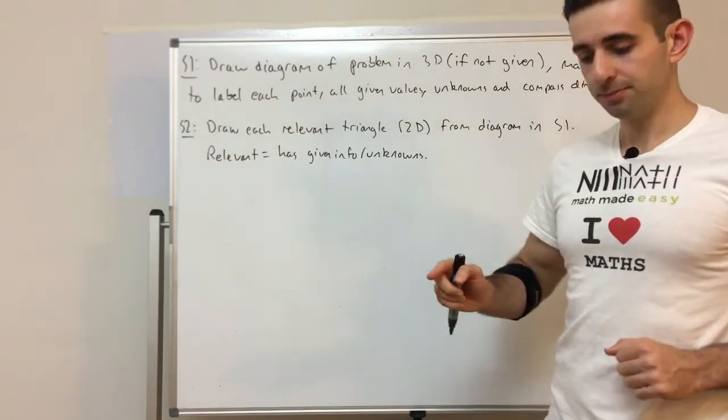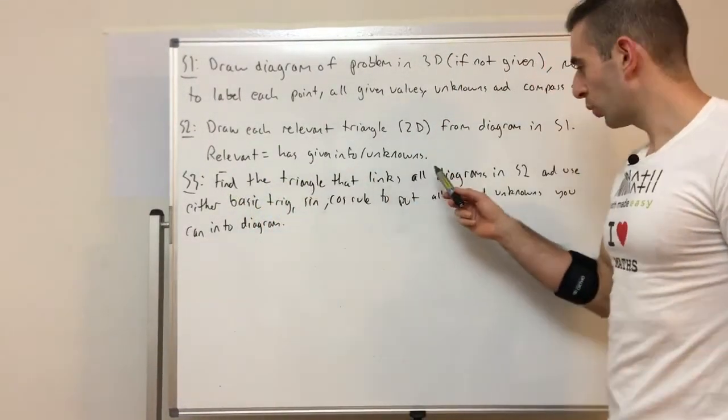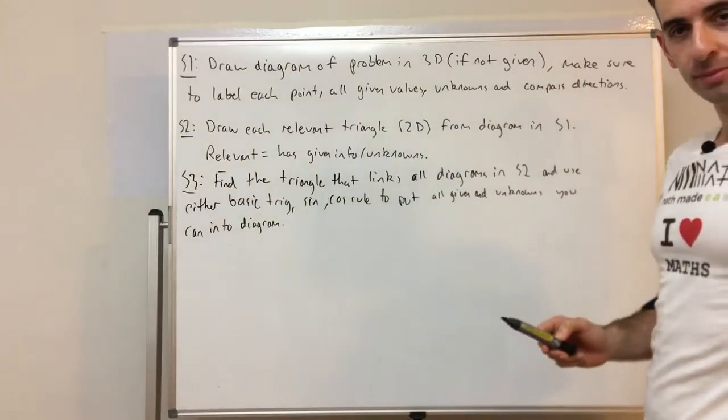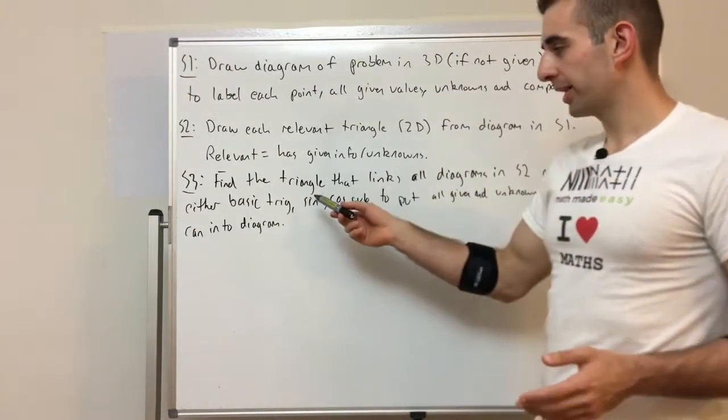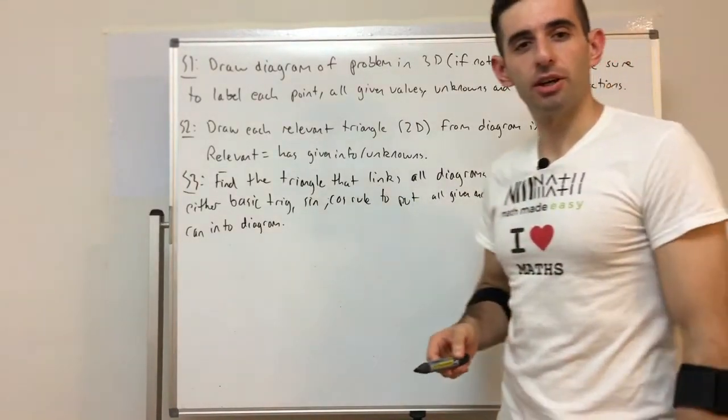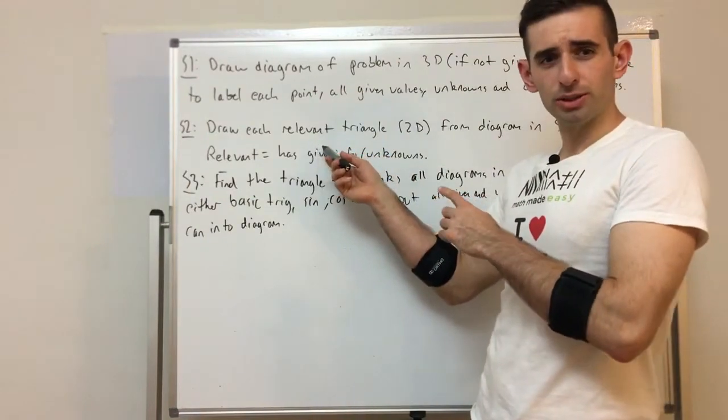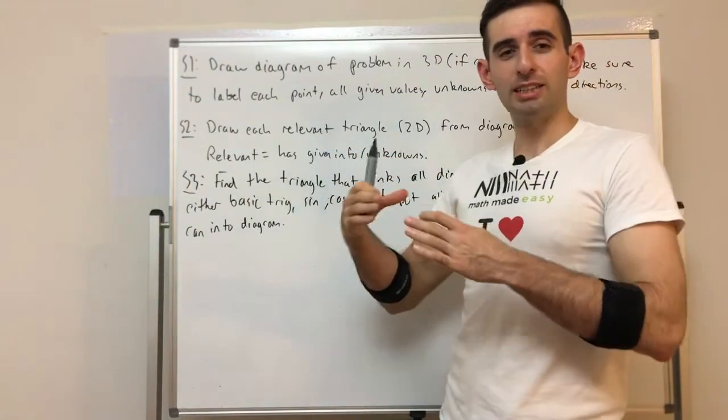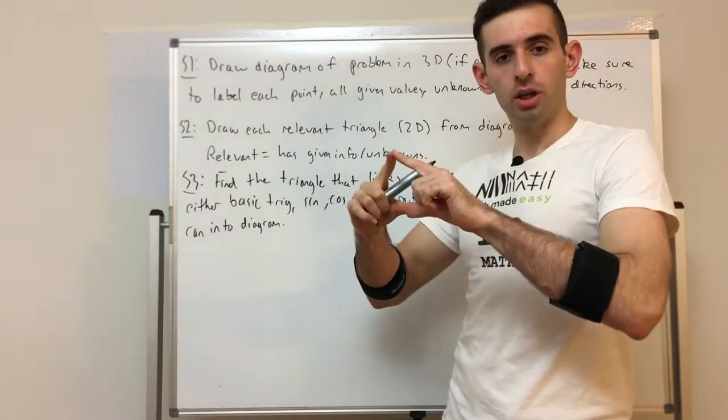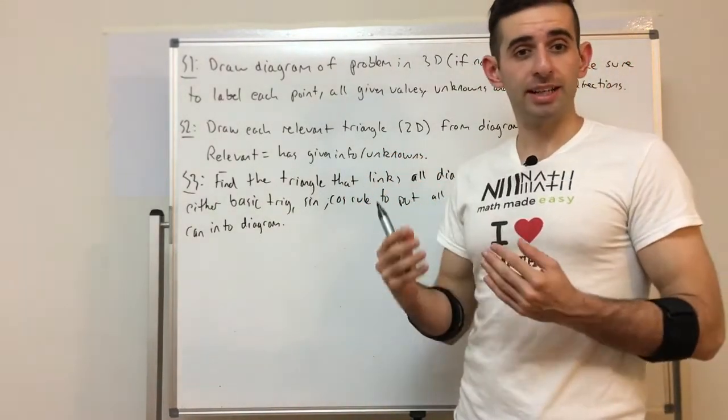So then what's step 3? Find the triangle that links all the diagrams in step 2 and use either basic trig, sine or cos rule to put all given and unknowns you can into that diagram. You'll have a few 2D triangles, but in order to answer the question there's only going to be one main triangle that we're going to use to find the unknowns.